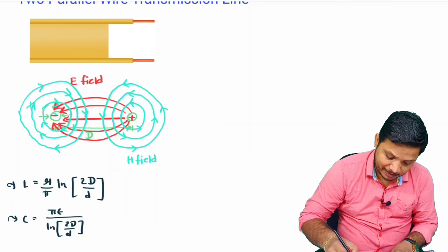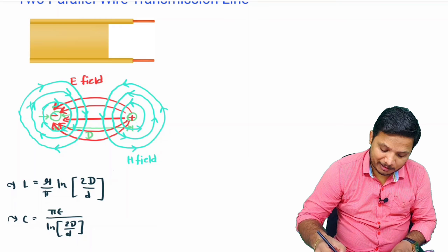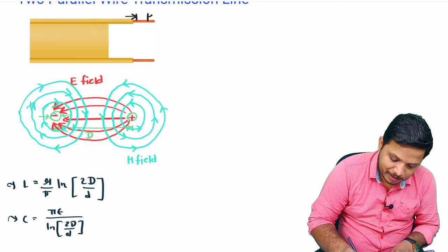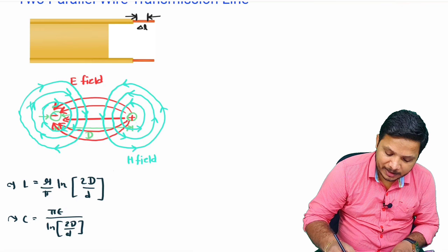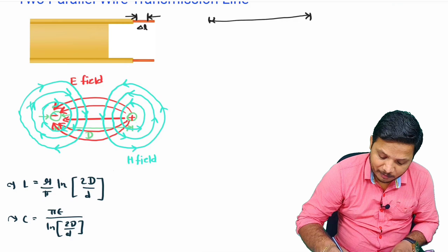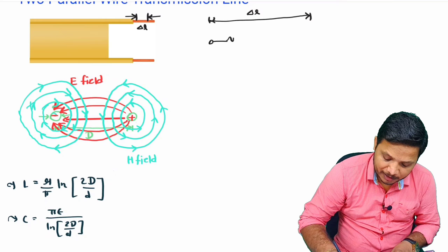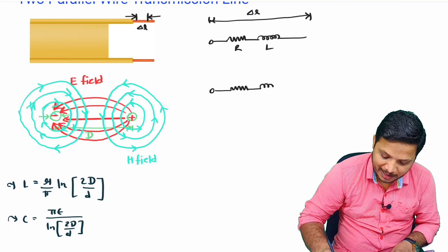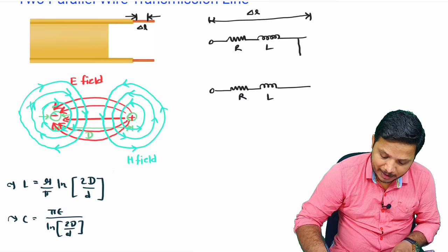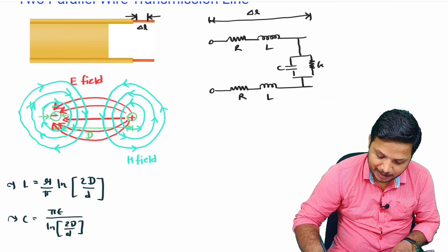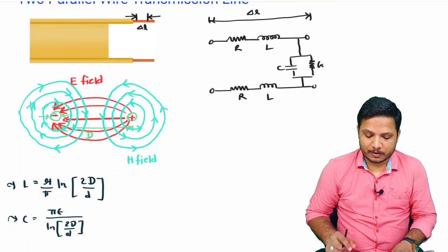Now I will show you the equivalent circuit of the two parallel wire transmission line. We consider a small differential section delta L of the complete transmission line. For this delta L section the equivalent circuit has RLGC components: R is resistance, L is inductance, and capacitance C and transconductance G are in parallel. This is the equivalent circuit of the two parallel wire transmission line.